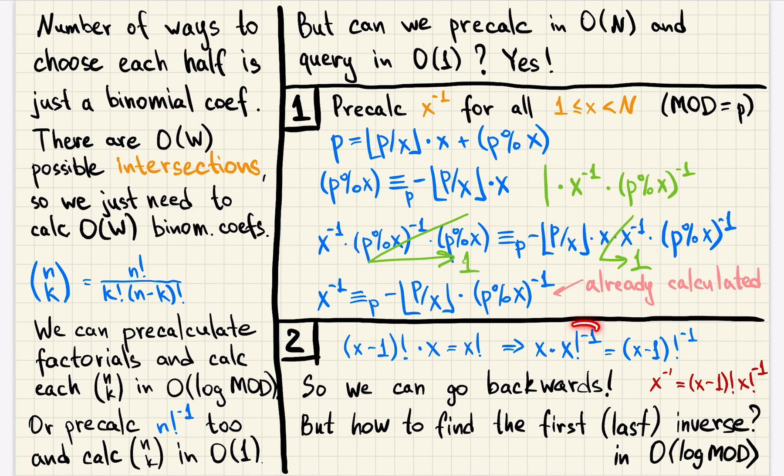So if we know the inverse of x factorial, we will be able to calculate the inverse of x minus 1 factorial. So we can go backwards in numbers. If we know the inverse of some big number factorial, we can from it go down to 0 and calculate all the inverses, each one in constant time because it's just multiplication by x. But how can we find that inverse factorial that we want to start with? Well, we know how to calculate the inverse in log mod. So we will pre-calculate factorials first, then calculate the inverse of the last one, and then go backwards and pre-calculate inverses for all smaller factorials.